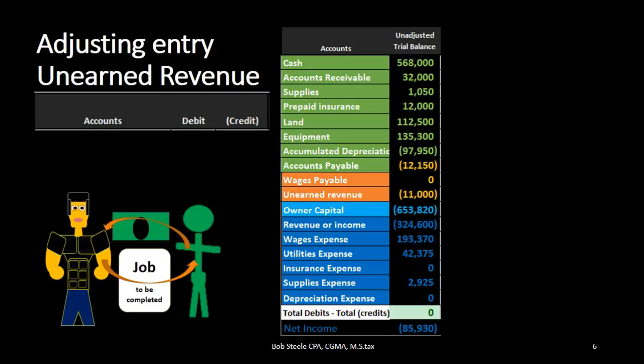Hello, in this lecture we're going to record the adjusting entry related to unearned revenue. Remember that the adjusting entry is going to be a separate process. It'll have the same rules as every journal entry, but we can add some added rules when we know that we are working with the adjusting entry process.